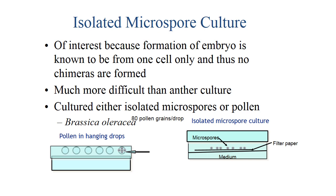After anther culture, the other option is isolated microspore culture. Microspores are the minute structures produced inside the anther. They are of interest because embryo formation is known to be from one cell only, and thus no chimeras are formed. Microspore culture is much more difficult than anther culture. The major practice is in Brassica or Brassica. The pollen are left in hanging drops, leading to release of microspores, then isolated microspore culture is done on filter paper.